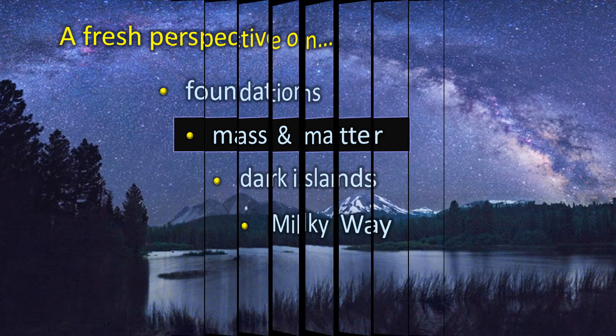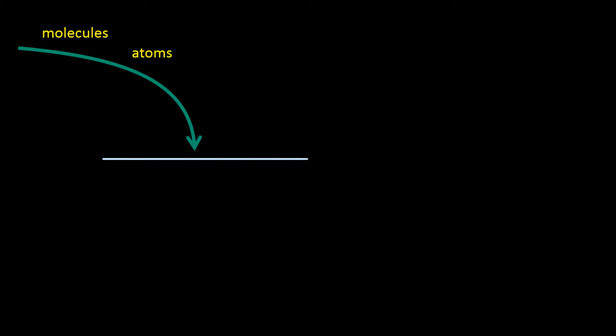As we know, everyday stuff is made from molecules. Molecules are built from atoms, and atoms are complex things built from tiny parts. These tiny parts are called leptons and quarks, which are thought to be elementary — that is to say, not made from smaller parts.